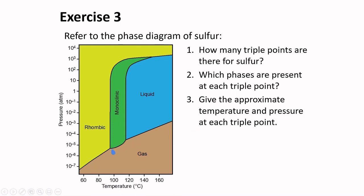At this triple point, the pressure is about 5 times 10 to the minus 6 atmospheres. And the temperature is about 95 degrees Celsius.